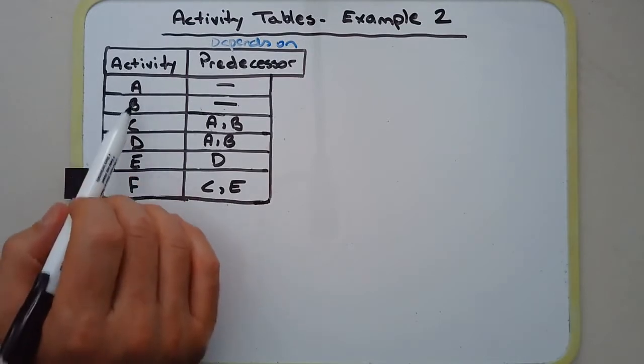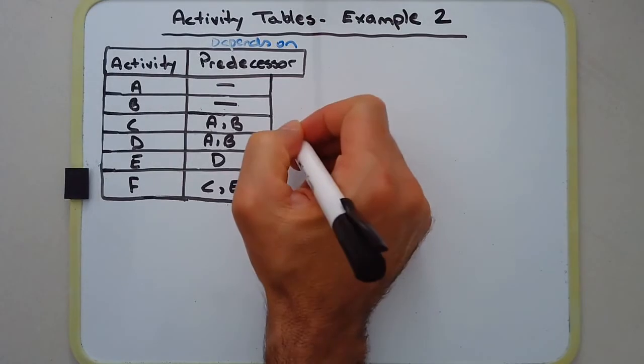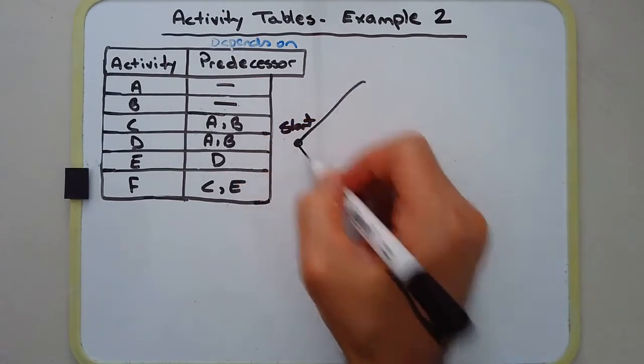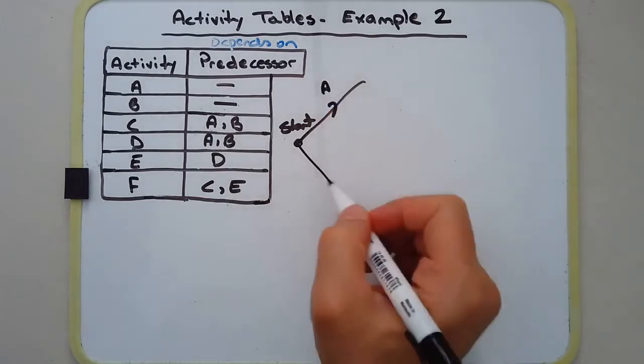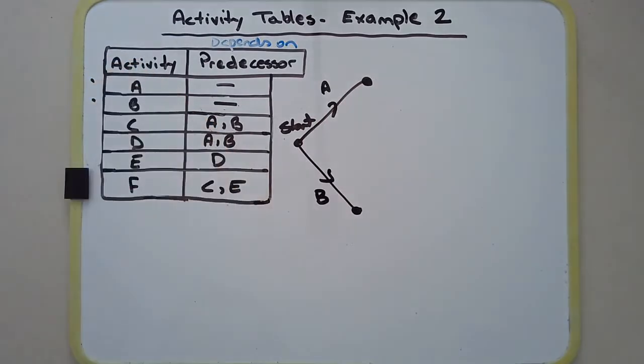So let's start. Activities A and B do not have any predecessors, so why don't we start off with our starting vertex and draw in our two activities A and B. Okay, so they're done.